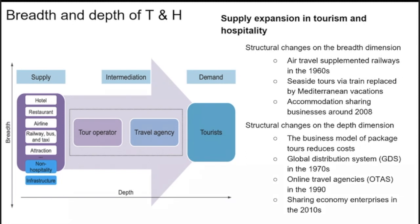When moving into the depth, you go through intermediaries like tour operators or travel agencies whose main job is to connect supply to demand — the demand always being the tourist, the consumer, the guest. Structural changes in the breadth dimension included air travel supplementing railways in the 1960s, enabling travel over greater distances. In the depth dimension, package tour business models reduced costs with intermediaries, followed by global distribution systems, online travel agencies, and sharing economy enterprises around 2010.